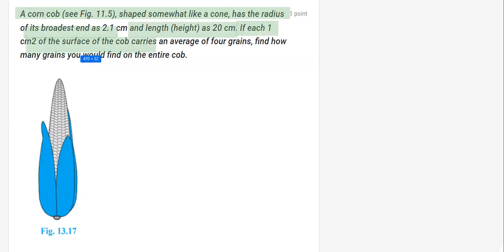Further, it says that if each 1 centimeter square of the surface of this corn cob carries an average of 4 grains, it means to say that if I have some 1 centimeter square area, there are 4 grains in total: one, two, three, four. We have to find the total number of grains in the entire cob.